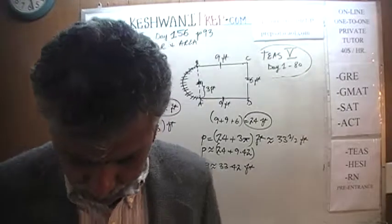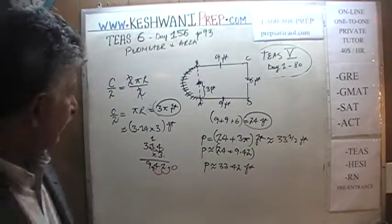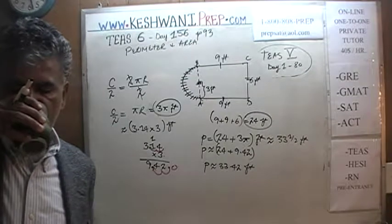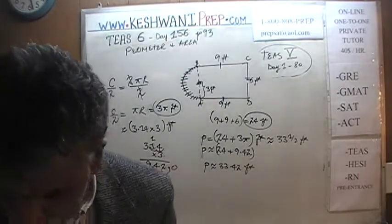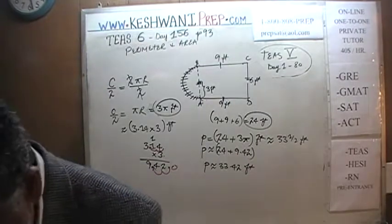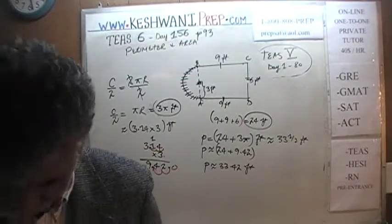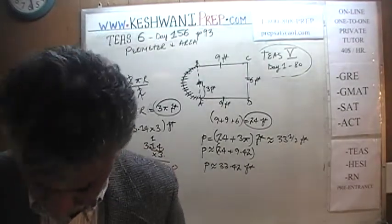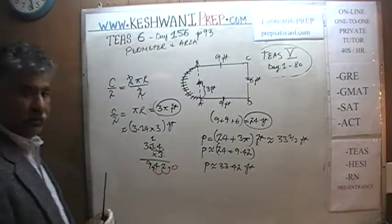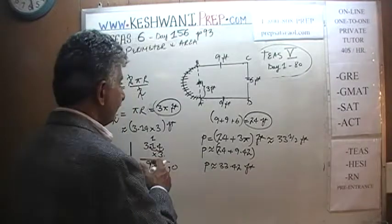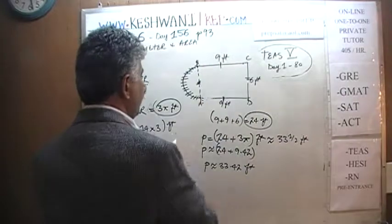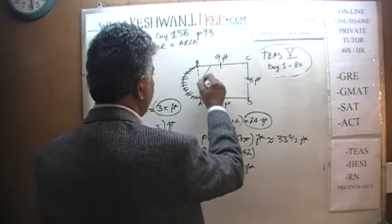Let's do the area now. Area is a little tricky — not because it's difficult, but it's going to require some more calculations. We're done with the perimeter. Now we'll figure out the area, starting with the easy part, which is the area of the rectangle.